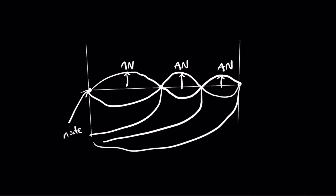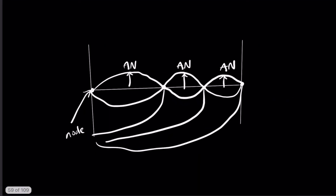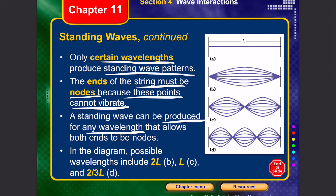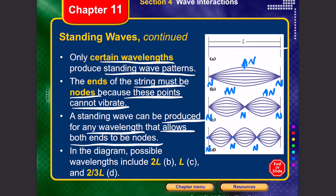Standing waves can be differentiated based on the number of cycles. If both ends are fixed, the number of cycles determines the number of nodes and antinodes. The number of nodes is always one more than the number of cycles, and the number of antinodes equals the number of complete cycles of the standing wave. Only certain wavelengths produce standing wave patterns; the ends of the strings must be nodes because those points cannot vibrate. In the diagram, we see three forms: two nodes and one antinode, three nodes and two antinodes, and four nodes and three antinodes.